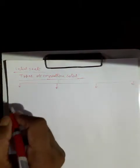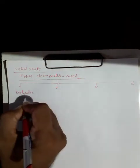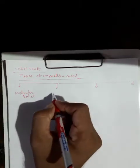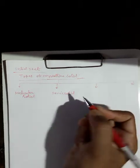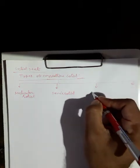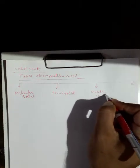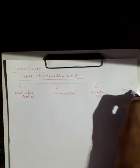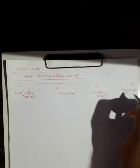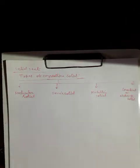The four types are: first, molecular solid; second, ionic solid; third, metallic solid; and fourth, covalent or network solid. Covalent solid is also known as network solid.